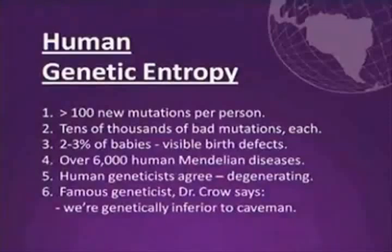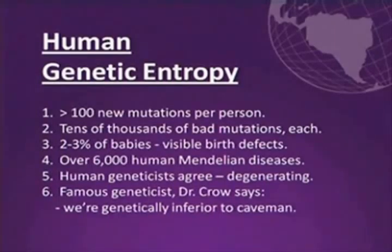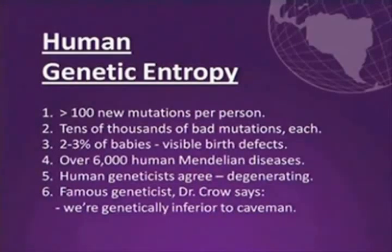Let's talk more specifically about human genetic entropy. Several decades ago, a very famous geneticist said that if the mutation rate was as high as one mutation per person per generation, human extinction would be certain, and human degeneration would be certain. Well, now we have actually measured the human mutation rate. It's over 100 mutations per person per generation.